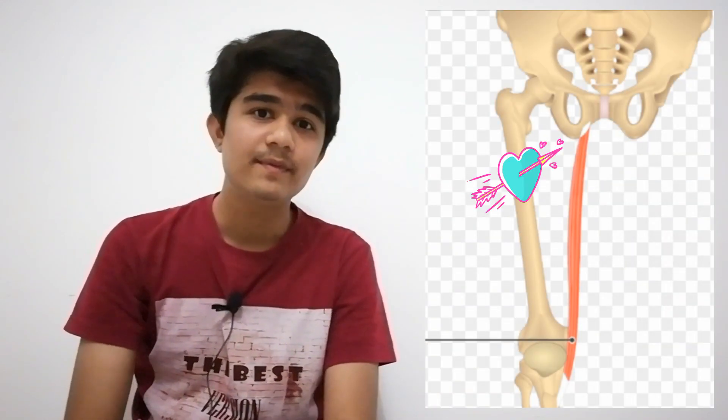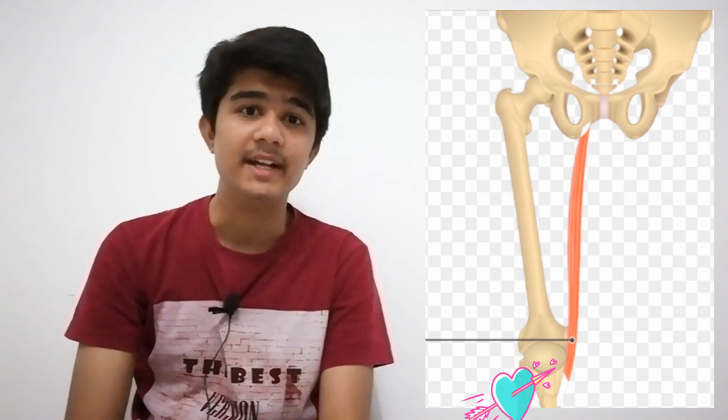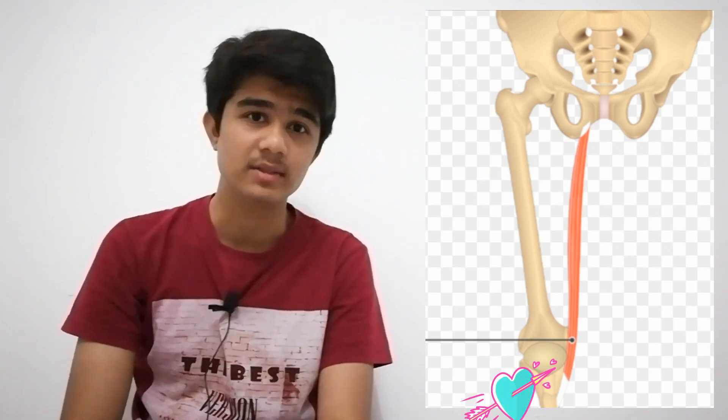Adductor magnus has a dual nerve supply: one is the femoral nerve and another is the tibial nerve. Gracilis arises from the pubic bone and inserts medial to the tibial tuberosity. Obturator externus is not that important but it originates from the obturator membrane. You can see that the common origin of these muscles is from the pubic bone and the common insertion is on the linea aspera.